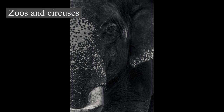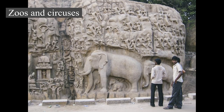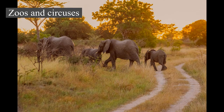Zoos and circuses: Elephants were historically kept for display in the menageries of ancient Egypt, China, Greece, and Rome. The Romans in particular pitted them against humans and other animals in gladiator events. In the modern era, elephants have traditionally been a major part of zoos and circuses around the world. In circuses, they are trained to perform tricks. The most famous circus elephant was probably Jumbo (1861–15 September 1885), who was a major attraction in the Barnum and Bailey Circus.